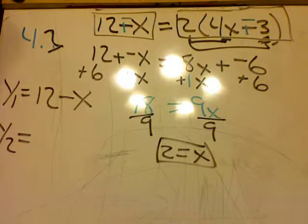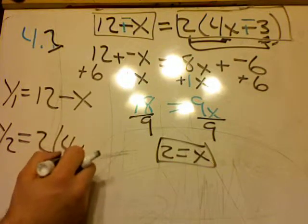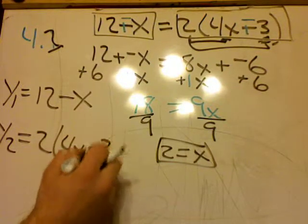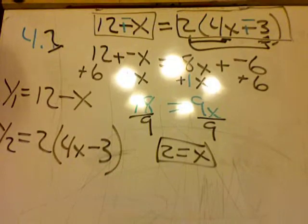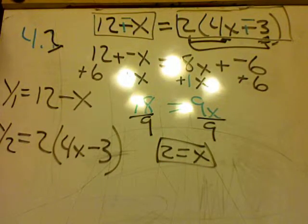And my second graph is going to be my y2, which is 2 times 4x minus 3. Again, I can do some more work if I want and make it 8x plus negative 6. That's fine, too, saying the same thing.